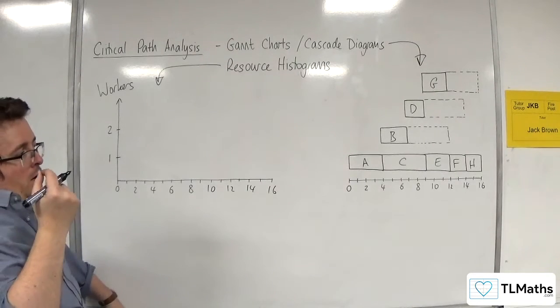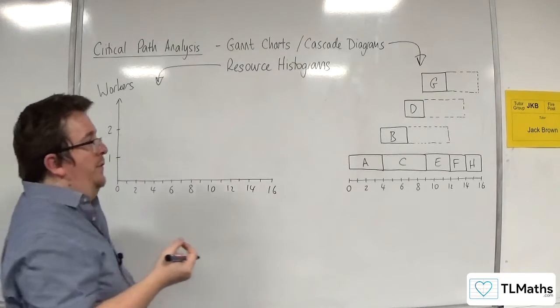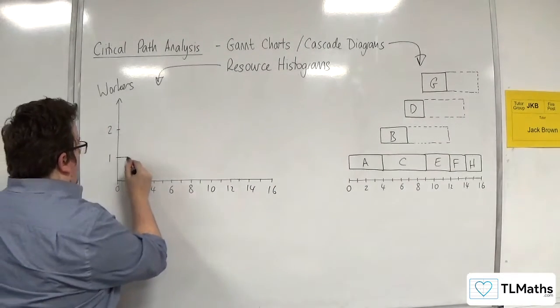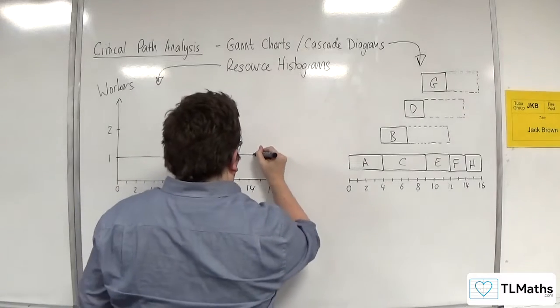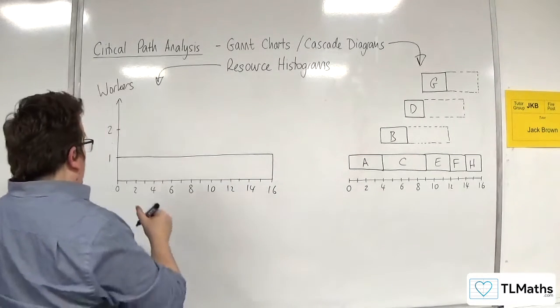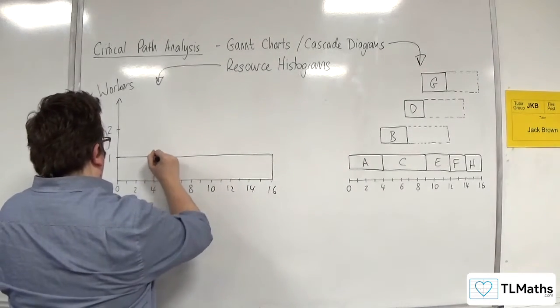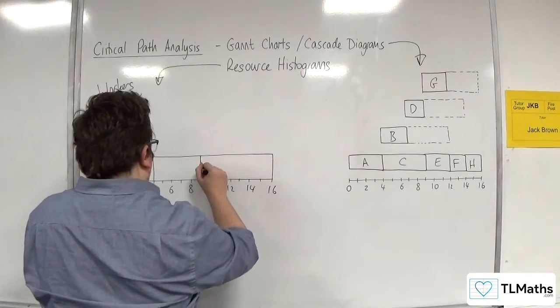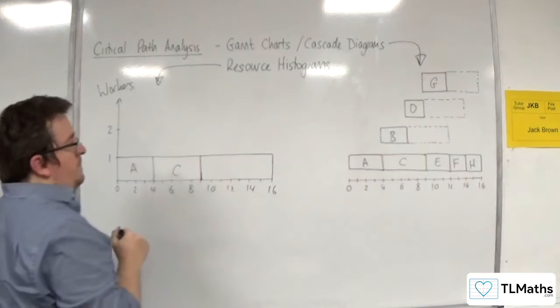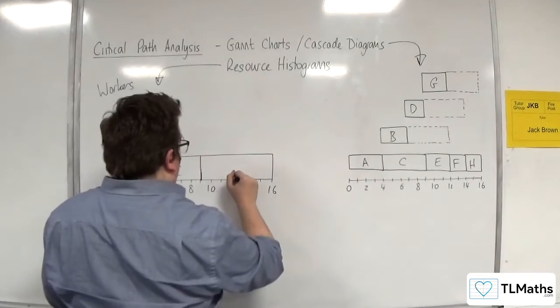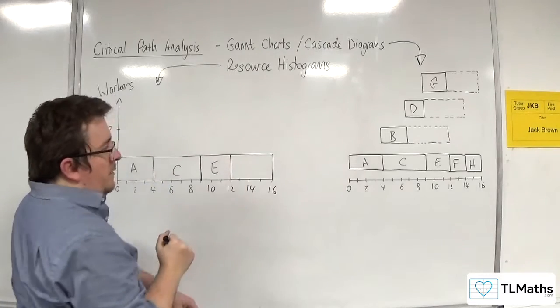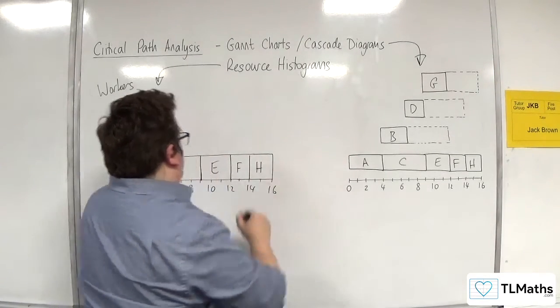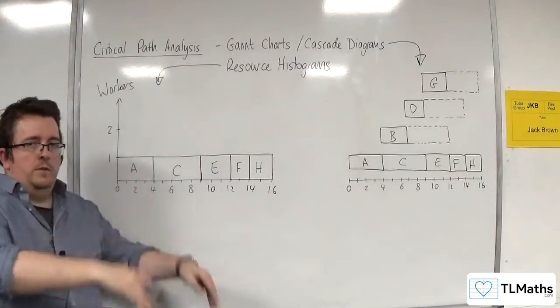So first of all, you put in your critical path. This row drops down and I can just put that in immediately. So I've got A going up to four. We've got C going up to nine. Oops, missed that. C. Then we've got E going up to 12, then F to 14, and then H up to 16. So that goes down.